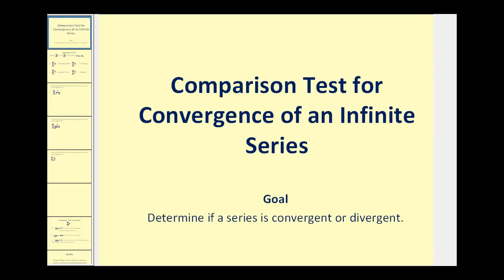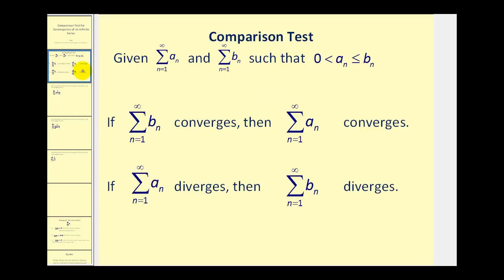Welcome to a video on the comparison test for the convergence of an infinite series. If we have two infinite series, a sub n and b sub n, such that they're both greater than zero, and a sub n is less than or equal to b sub n, then if the infinite series b sub n converges, then so does the infinite series a sub n. And if the infinite series a sub n diverges, then so does the infinite series of b sub n.